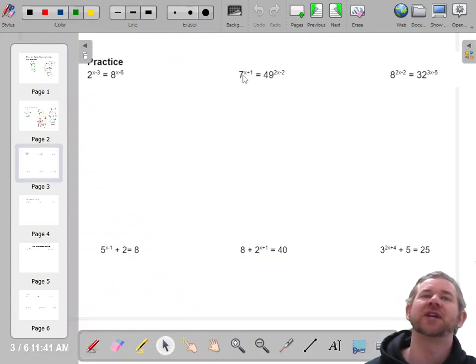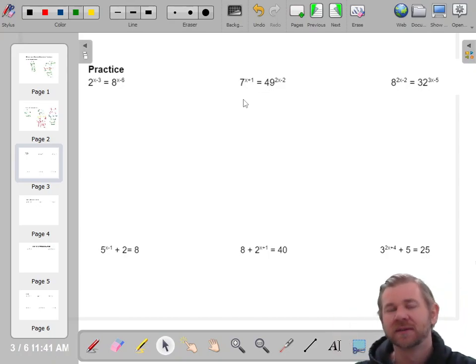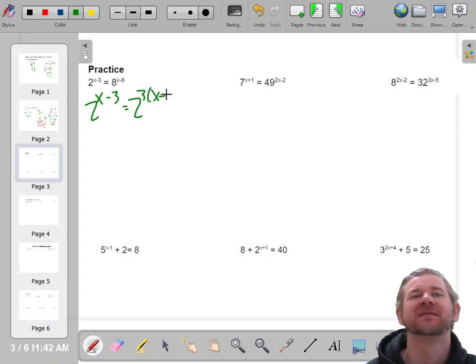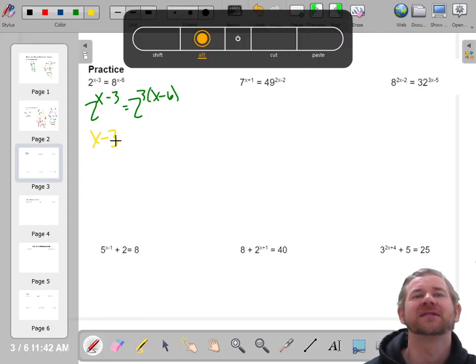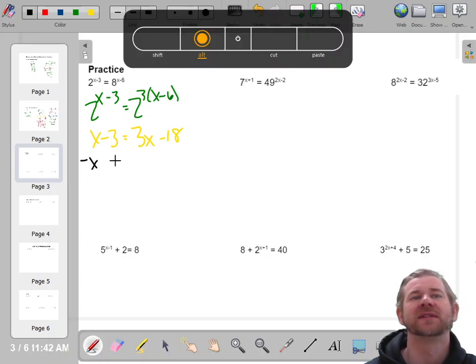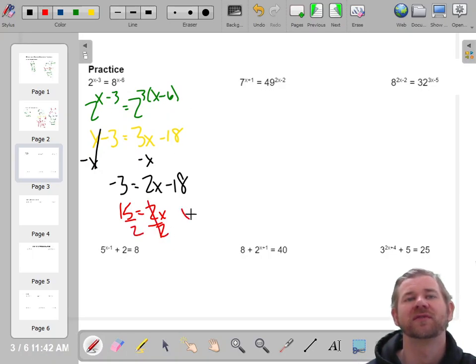All right, so I'm going to do the practice problems. My suggestion is pause it right now. You try and work them out. And then hit resume. So we're back. These are both base 2. If you rewrite 8 as 2 cubed. And now I'll say x minus 3 equals 3x minus 6 times 3 is 18. Get all your x's on one side. Negative 3 equals 2x minus 18. Add 18 to both sides. 15 equals 2x. And then when you divide by 2, that's 7.5. So x equals 7.5.